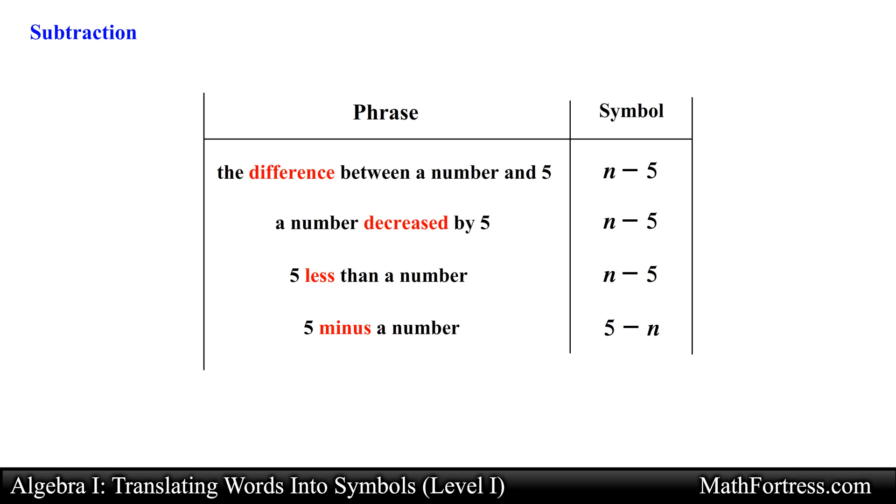When translating phrases that involve subtraction, many students have a hard time translating phrases with the word less. Many students translate 5 less than a number as 5 minus x which is completely wrong. The correct way is x minus 5 because it's 5 less than a number so you take the number and subtract 5.